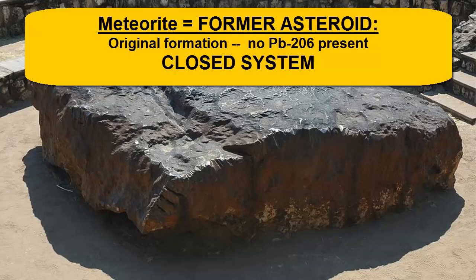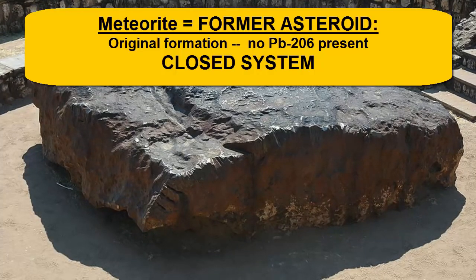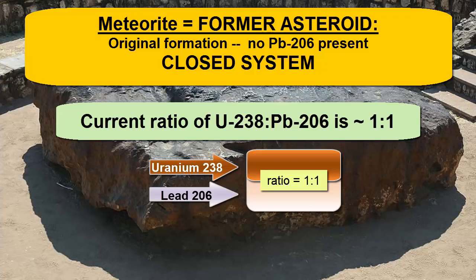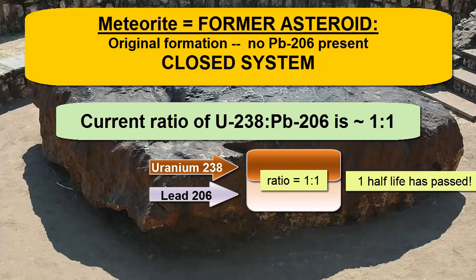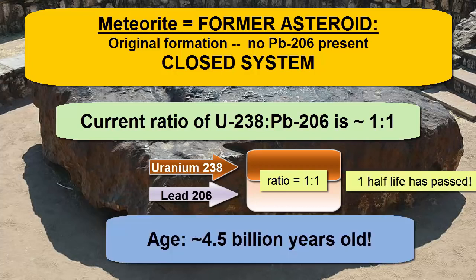So if we open a closed system asteroid that formed 4.6 billion years ago with no lead-206 at that time and no loss or gain from or to the outside world since, we can use the ratio of the parent and daughter within to determine how long decay has been happening, or how old the meteorite is. And what do we find? Almost exactly equal amounts of uranium-238 to lead-206. That ratio of 1 to 1 is possible only if exactly one half-life has passed. The meteorite formed about 4.5 billion years ago. Of course, in the lab, we get a lot more precise.